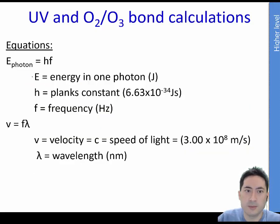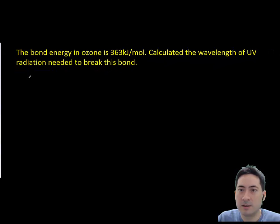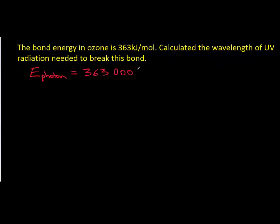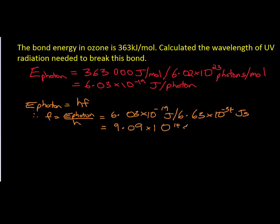These equations here are in your data booklet. So just be aware you might get confused by some changes in symbols. Velocity or c is used interchangeably there. So just working through the calculations here. There's a problem. The bond energy of ozone is 363 kilojoules per mole. Calculate the wavelength that's required to break the ozone. So we first work out the amount of energy in a single photon, by dividing it by a mole. We then use the formula: energy equals frequency times Planck's constant from the data booklet. That will give us the frequency of a single photon. We can then, using the velocity or speed of light, work out the wavelength for a single photon.